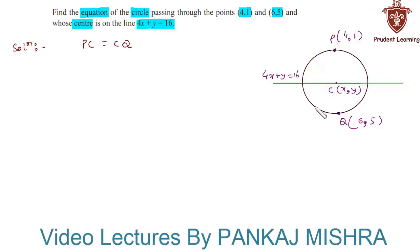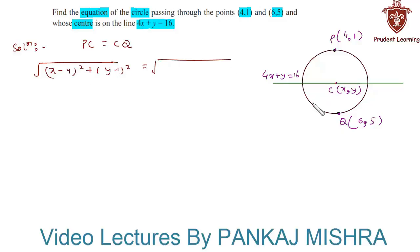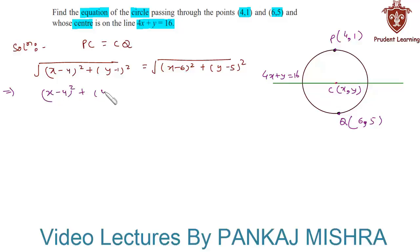Using the distance formula, we have: the square root of (x minus 4) whole square plus (y minus 1) whole square equals the square root of (x minus 6) whole square plus (y minus 5) whole square. Squaring both sides gives (x minus 4)² plus (y minus 1)² equals (x minus 6)² plus (y minus 5)².